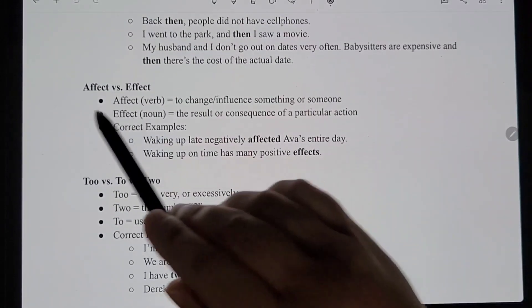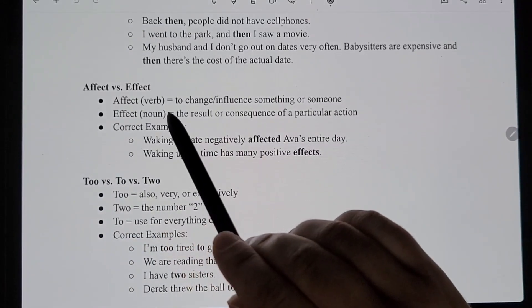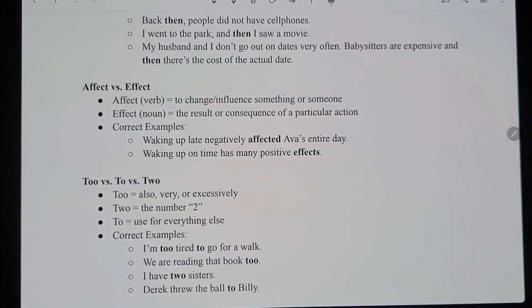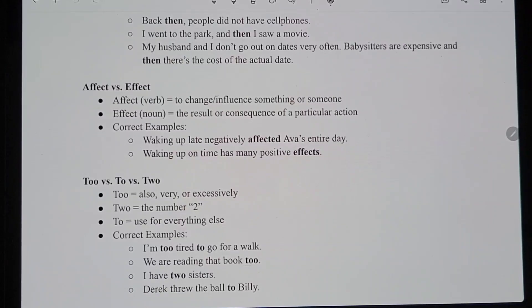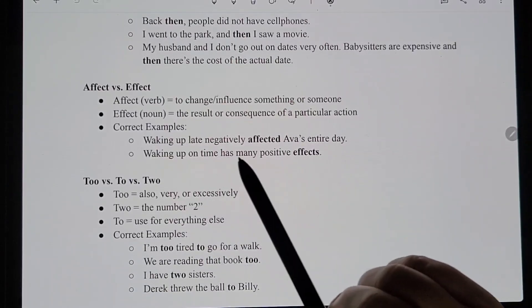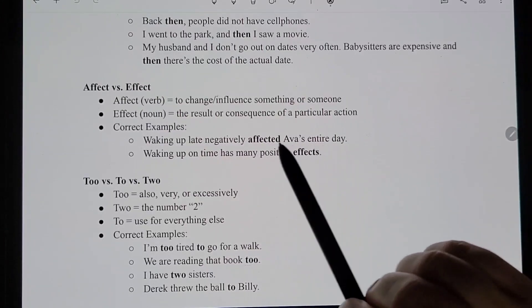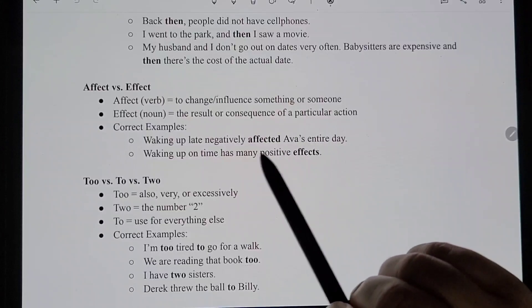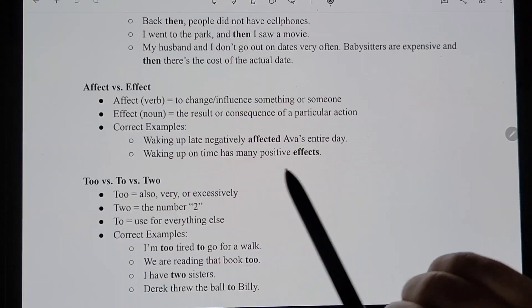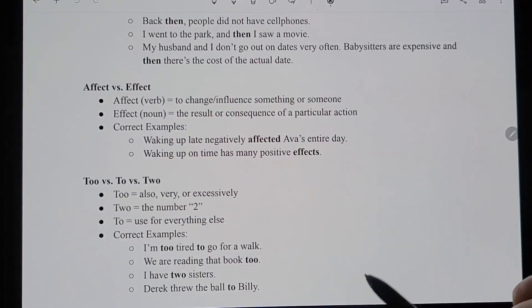Now: 'affect' versus 'effect.' The one with the A is the verb — you're changing or influencing something or someone, like you're affecting someone. The E version is the noun — think 'cause and effect,' where the effect is the result or consequence of a particular action. Correct examples: 'Waking up late negatively affected Ava's entire day' — verb. 'Waking up on time has many positive effects' — noun, meaning results.